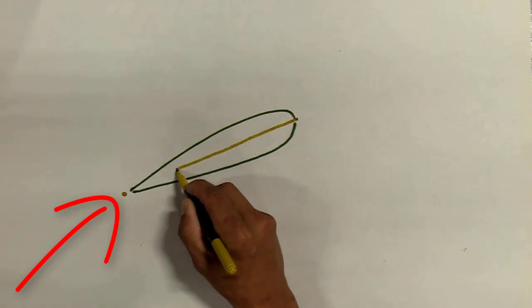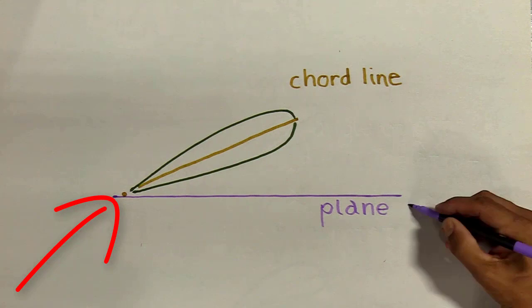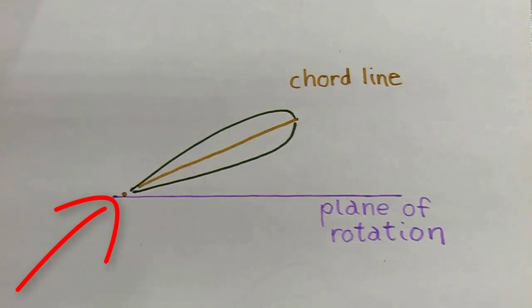So we're going to start with our chord line going up through the blade. Down here, this is our plane of rotation. This is the actual plane that the rotor blade is moving through the air.